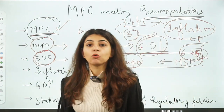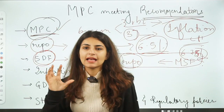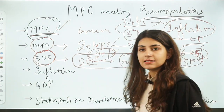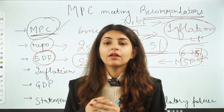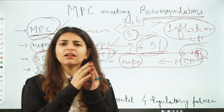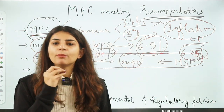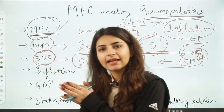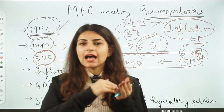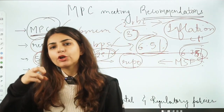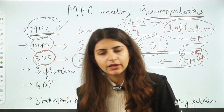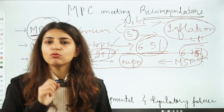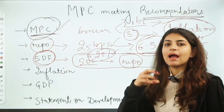Now we have understood what is MPC, its purpose, the repo rate, and the SDF. But what has been the stance of the Monetary Policy Committee and why have they increased the rate this time? The stance was withdrawal of accommodation. Up until the beginning of 2022, the RBI was following monetary policy accommodation — decreasing rates and injecting liquidity into the economy. But since last year, over the last 5–6 meetings, the stance has been withdrawal of that accommodation, to absorb excess liquidity out of the economy. The stance has been monetary tightening, which is why the rates have increased.